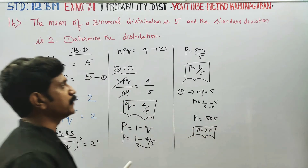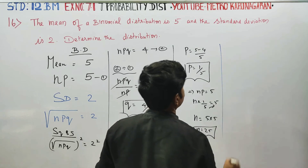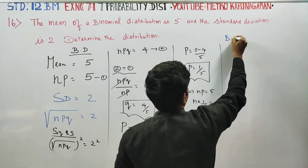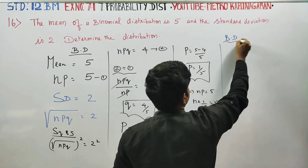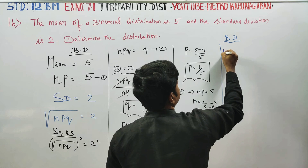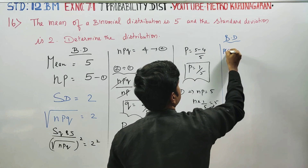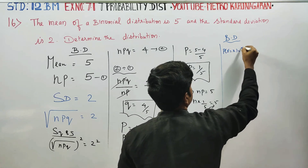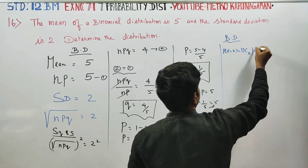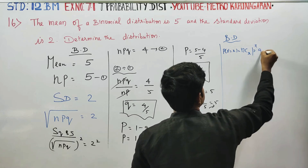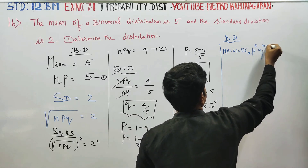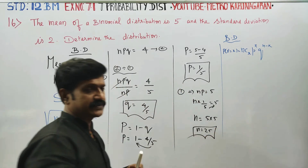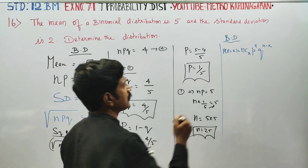Now I am going to write the binomial distribution. The formula is: probability of X equals x is ncx times p power x times q power n minus x. Substituting, n equals 25.